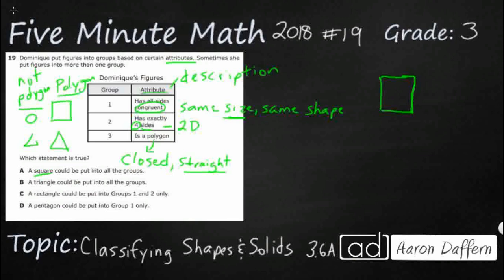Does a square have all sides congruent? Are all sides the exact same size? Yes. So I'm going to put a group one check. Does it have exactly four sides? Yes. That's what makes it square. Is it a polygon? Is it closed and straight? Yes. So you know what? I think this one might be your answer. Let's check.